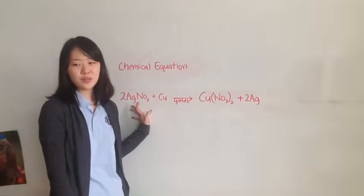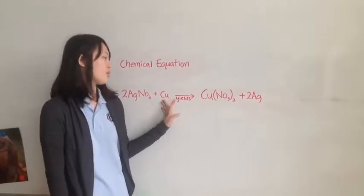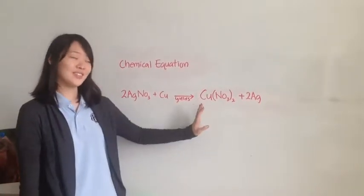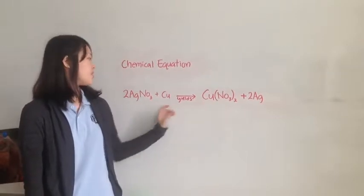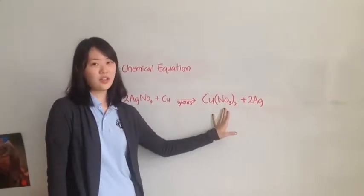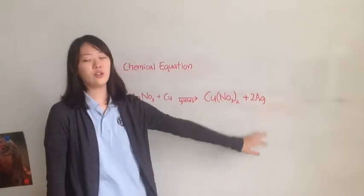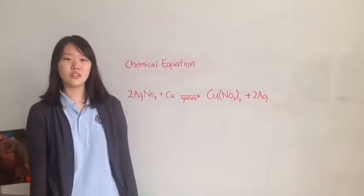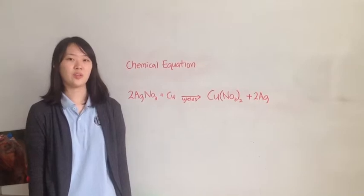Silver was bonded with nitrate ion and copper was alone. However, as a product, copper replaced silver and bonded with nitrate ion, leaving the silver alone. This is called single replacement because there's only one replacement happening.